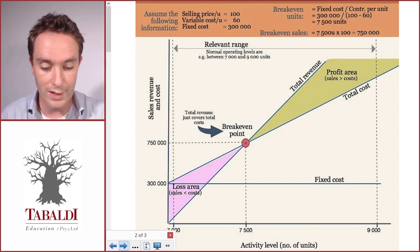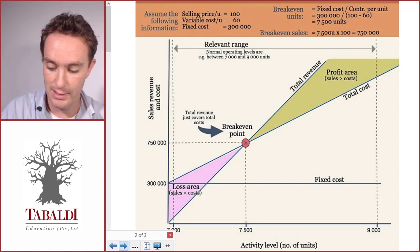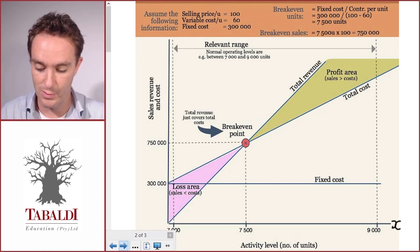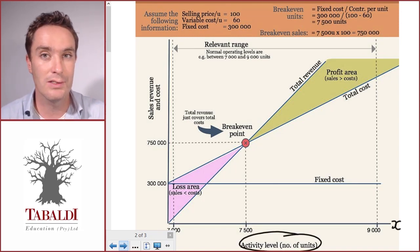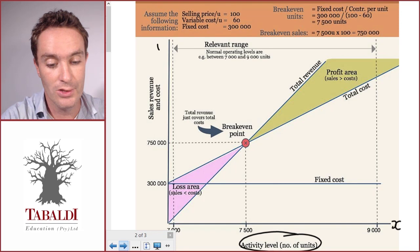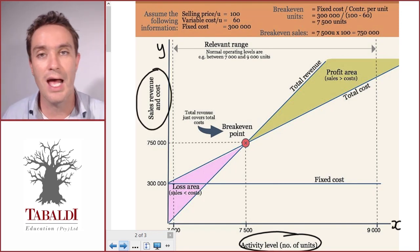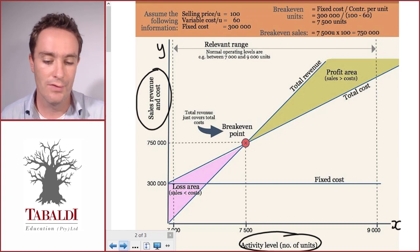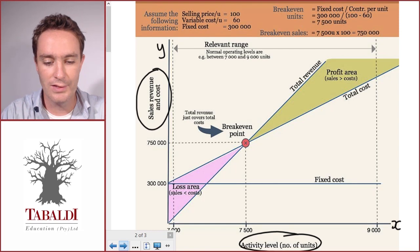The first thing when you see a graph like this is to take a breath and relax. The next thing you do is to figure out what the two axes represent. The x-axis, the horizontal line, is the activity level, the number of units. The vertical one, the y-axis, is sales revenue and cost.